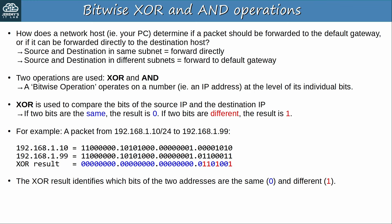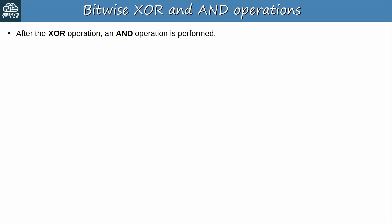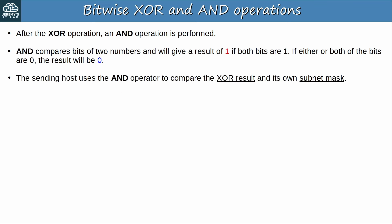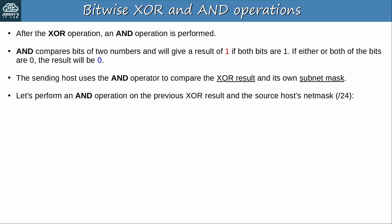With XOR alone, the source host can't identify if the destination is in the same subnet or not. Any time two hosts have a different IP address, some of their bits will be different, but that doesn't mean they are always in different subnets. After the XOR operation, the AND operation is performed. AND compares bits of two numbers, and will give a result of 1 if both bits are 1, but if either or both of the bits are 0, the result will be 0. The sending host uses the AND operator to compare the XOR result and its own subnet mask.